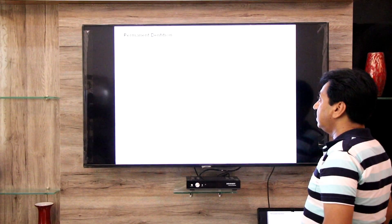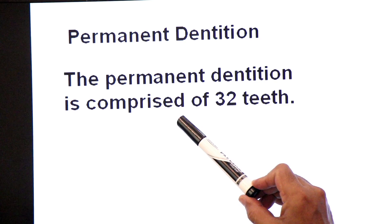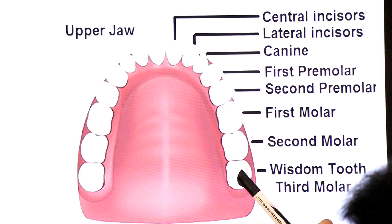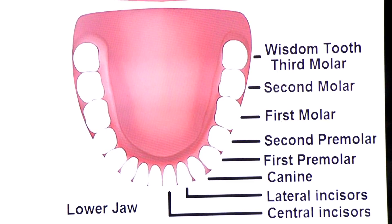This is called permanent dentition, or secondary dentition. The permanent dentition is comprised of 32 teeth — 16 are present in the upper jaw as maxillary teeth, and 16 are present in the lower jaw as mandibular teeth.